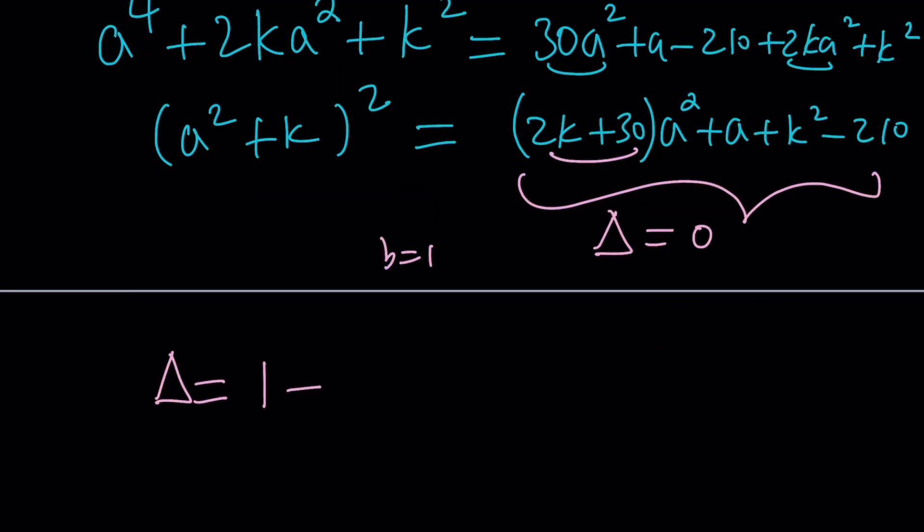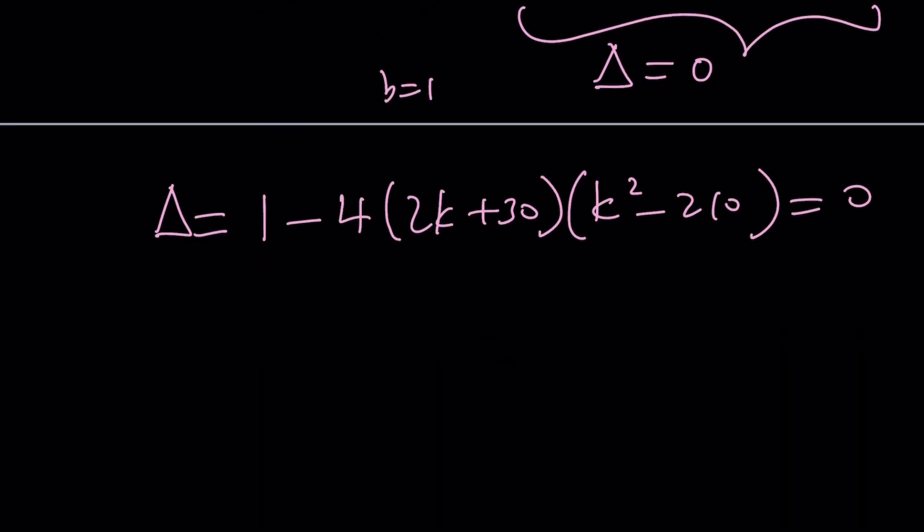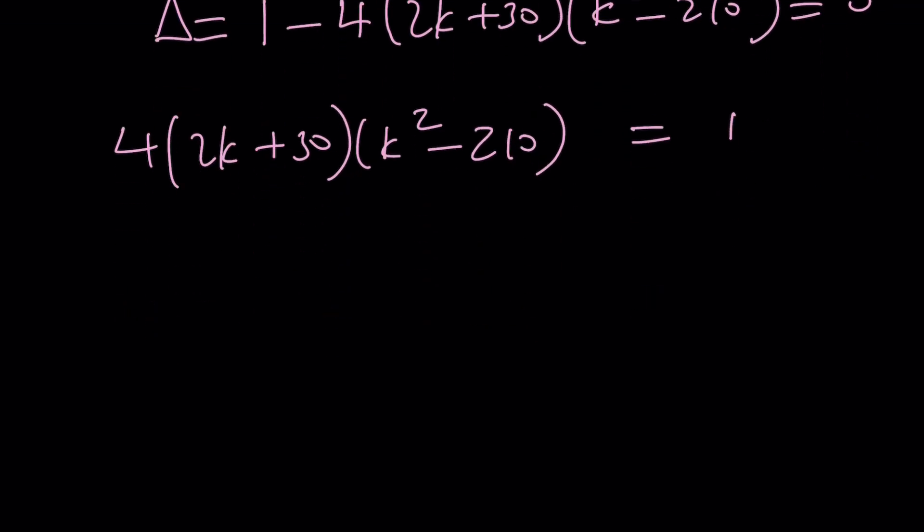Let's go ahead and put these two together. 2k plus 30 multiplied by a squared plus a and then plus k squared minus 210. So here's the deal. And that's a big deal. We're going to go ahead and we want this to be a perfect square. So the discriminant needs to be zero. b squared minus 4ac equals 0.